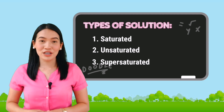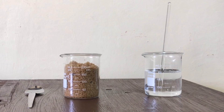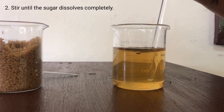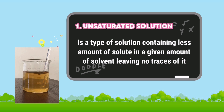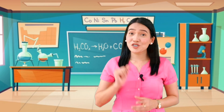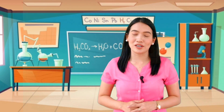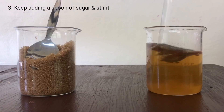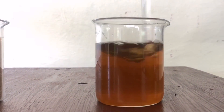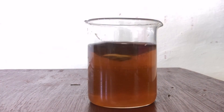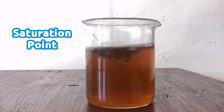Let's find out what these three types of solution are all about based on the amount of dissolved solute in a solvent. Put one spoon of sugar into the water and stir it until the sugar dissolves completely — we are able to make a sugar solution. Unsaturated solution is a type of solution containing less amount of solute in a given amount of solvent, leaving no traces of it. Wonder what will happen if you keep adding more sugar to the solution. Keep adding a spoon of sugar and stir it. Notice that after a few spoons, the sugar starts settling at the bottom of the beaker despite all the stirring. There comes a stage at which no more sugar can be dissolved — this solution is now saturated, and this point is called the saturation point.